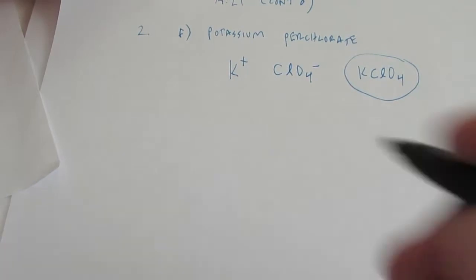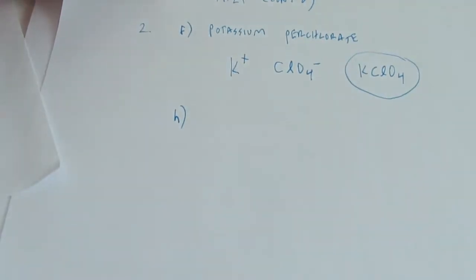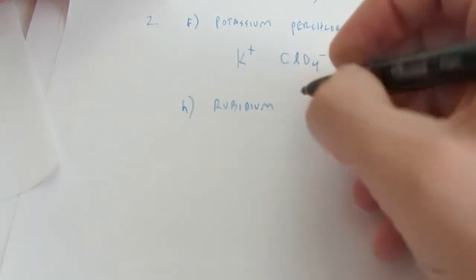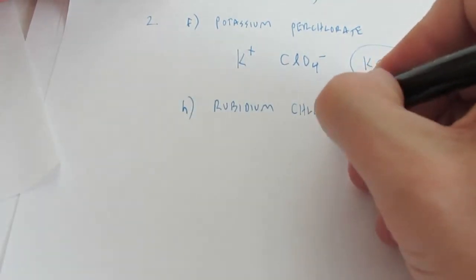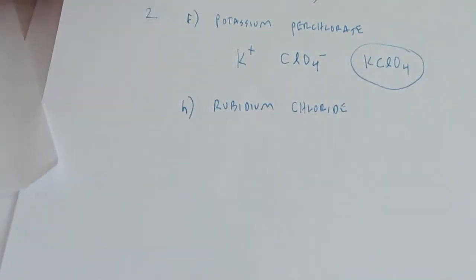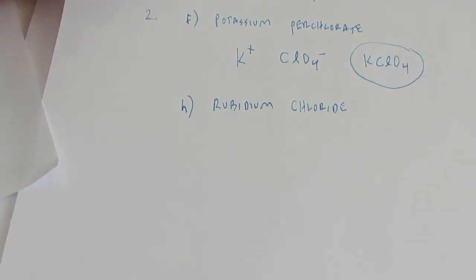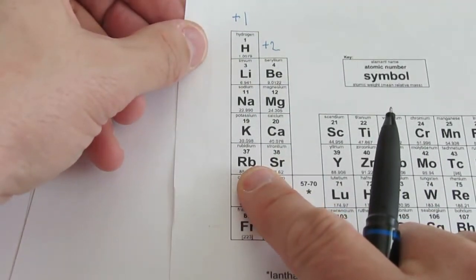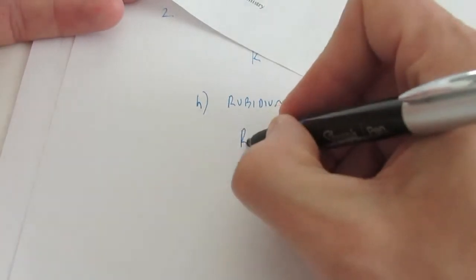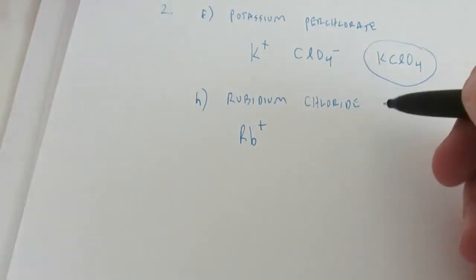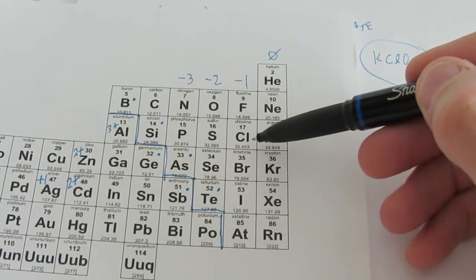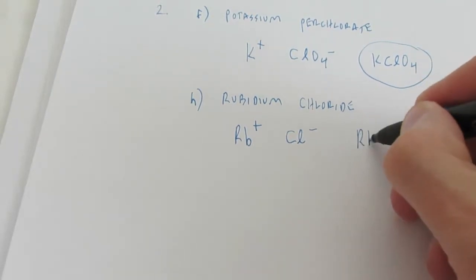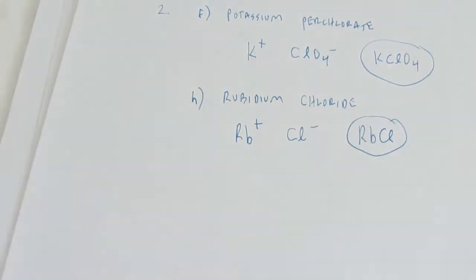Letter H is rubidium chloride. Rubidium is a metal in group one — the alkali metals have a positive one charge when they form ionic compounds. Chloride comes from chlorine, which is a halogen, and it's negative one. Positive one and negative one — just one of each again. The formula is RbCl.